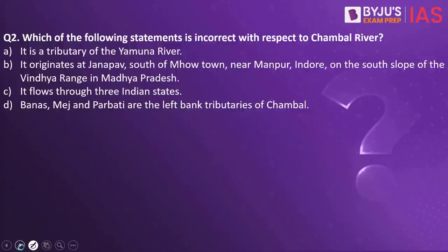Which of the following statements is incorrect with respect to Chambal river? It is a tributary of the Yamuna river. It originates at Janapav, south of Mow town near Manpur, Indore, on the south slope of Vindhya range in Madhya Pradesh. It flows through three Indian states. Banas, Mej, and Parbati are the left bank tributaries of Chambal. The answer is that Banas, Mej, and Parbati are the left bank tributaries of Chambal — this is the wrong statement.